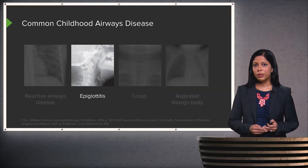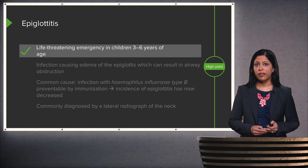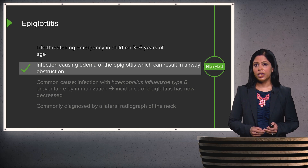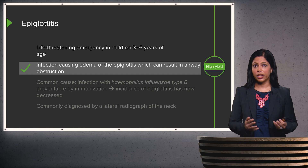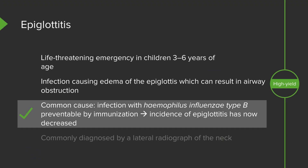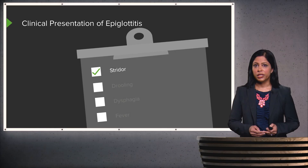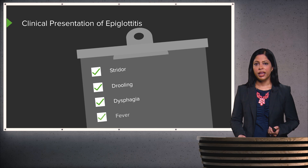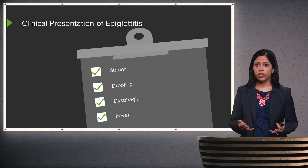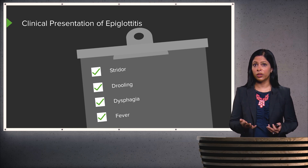Epiglottitis is another relatively commonly seen airway disease that's becoming somewhat less frequent these days, but when it does present, it can be life-threatening. It usually presents in kids between the ages of three and six as an infection causing edema of the epiglottis, which can result in airway obstruction. Common causes include infection with H. flu type B, and it's preventable by immunization, which is why the incidence has decreased. Clinically, patients present with stridor, drooling, dysphagia, and fever. Whenever a patient presents with stridor, you always want to make sure there isn't an obstructing lesion of the neck.